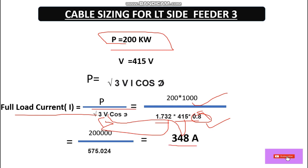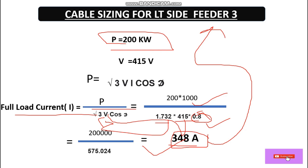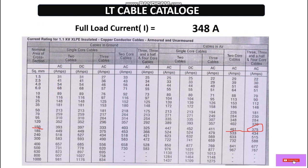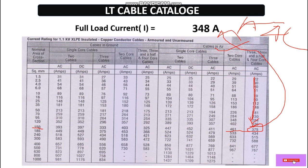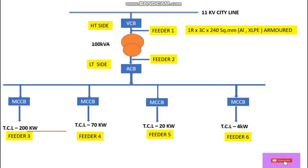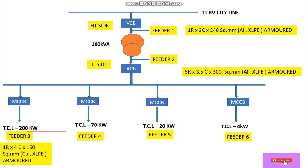According to this full load current of 348A, we look into the LT cable catalog to find the cable size. We are going for a four-core cable laid in air at ambient temperature. Looking at the catalog, 330A is under our load current, so we move to the higher value of 375A, which corresponds to a 150 sq mm cable. So for feeder three, the cable selected is one run, four-core, 150 sq mm copper XLPE insulated armored cable.